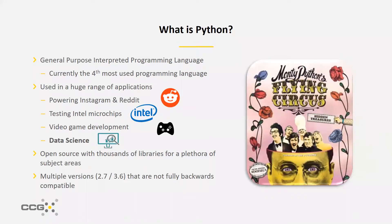There are also multiple versions of Python out there right now. There's Python 2 and Python 3, and they're not fully backwards compatible. Some syntax in Python 2 will not run in a Python 3 environment, and vice versa. There are packages and tools you can use to mitigate this, but it's by no means seamless, and it's something to be aware of.